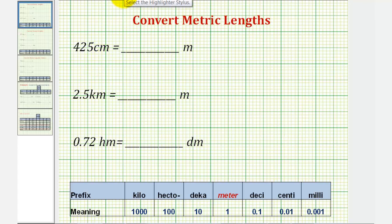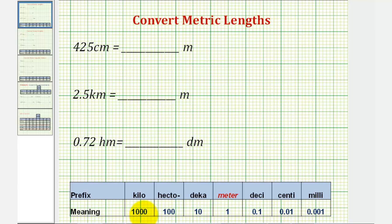The first thing we should recognize is that this table is using meter as the basic unit. Therefore, the smallest unit in this table would be millimeter, where a millimeter is equal to one thousandth of a meter. The largest unit would be a kilometer, which is equal to one thousand meters.